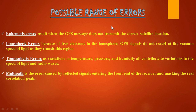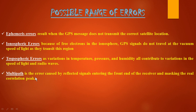Possible range of errors include: ephemeris errors, which result when the GPS message does not transmit the correct satellite location; ionospheric errors, where free electrons in the ionosphere cause GPS signals to not travel at the vacuum speed of light; tropospheric errors, where variations in temperature, pressure, and humidity contribute to variation in the speed of light and radio waves; and multipath errors, caused by reflected signals entering the receiver and masking the real correlation peak.